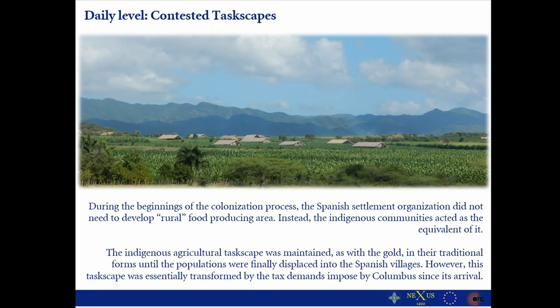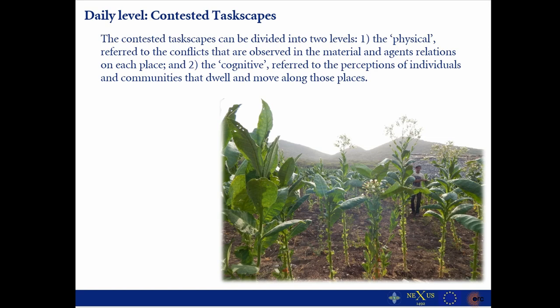A second example of this contestation: during the beginning of the colonization process, the Spanish settlement organization did not need to develop a rural area for producing food. Instead, indigenous communities acted as the equivalent. The indigenous agricultural task was maintained in its traditional forms until the population were finally displaced into Spanish villages. However, this task was essentially transformed by the demands imposed by Columbus since his arrival. At this level, I think the idea of contested tasks can be divided into two sub-levels.